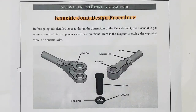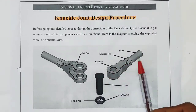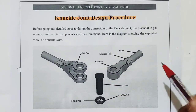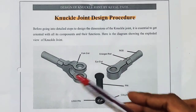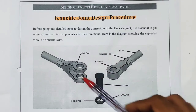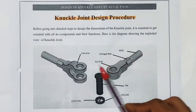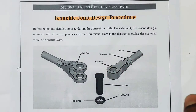What are the advantages of the knuckle joint? First, it is very simple to design and manufacture. Second, assembly and disassembly is very easy — you just remove the pin and the assembly is disassembled. Third, there are very few parts in the knuckle joint, which reduces the cost.